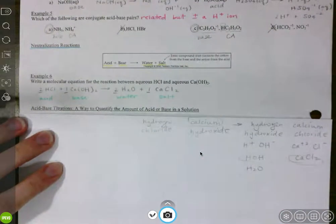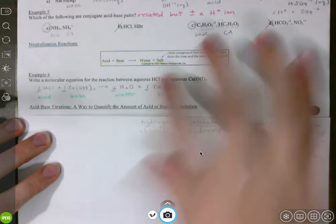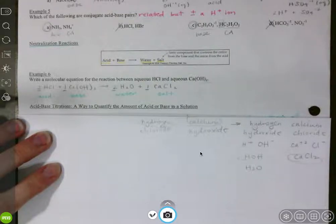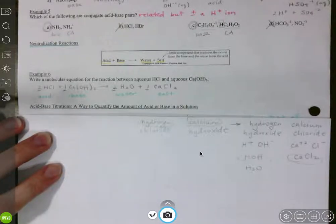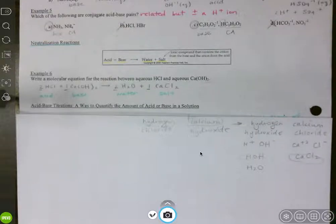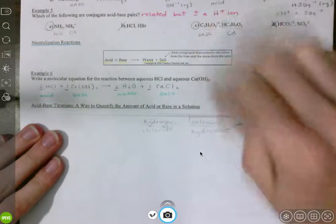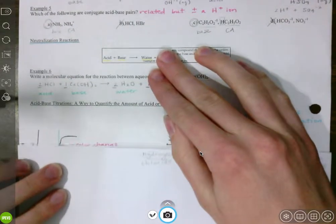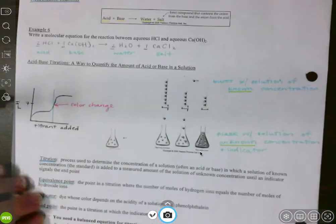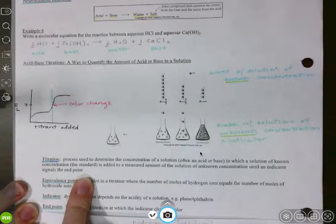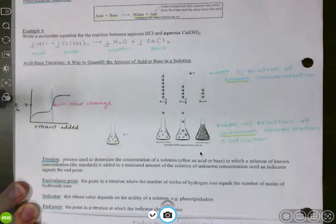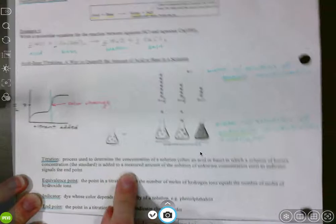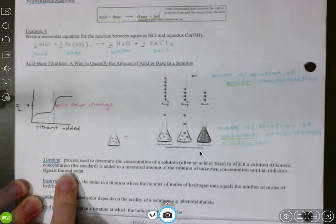Our next thing that we're looking at is acid-base titrations. With titrations, we are going to be trying to figure out the molarity of an unknown acid or unknown base using a known concentration of the opposite — an acid or a base. There is a video on Canvas that has a brief overview of titration reactions that I would suggest you look at. Titration is the process used to determine the concentration of a solution, often an acid or a base, in which the solution of a known concentration — the standard — is added to a measured amount of solution of unknown concentration until an indicator signals the end point.